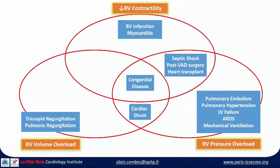It might also be seen in some patients with severe RV failure in the setting of lung failure, like severe ARDS patients or those on mechanical ventilation. Volume overload may occur in patients who have tricuspid or pulmonary regurgitation, which is not that frequent.